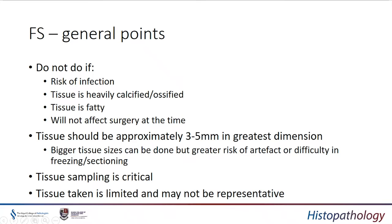The tissue should be of the order of a thumbnail in size and a couple of millimetres in thickness at most. The bigger the size, the greater the chance it won't freeze, won't cut, and the greater the chance of a poor section. Poor sections mean difficulty in diagnosing and potentially a wrong answer. It is critical to get the right area to sample — particularly with large lesions — because if you take the wrong bit you may get the wrong answer.